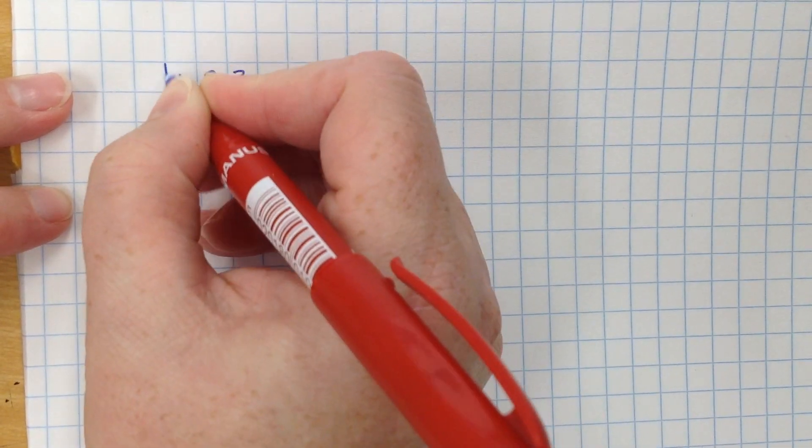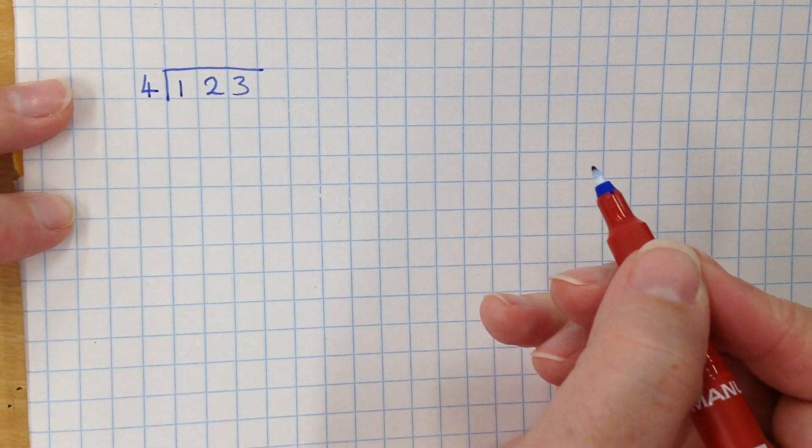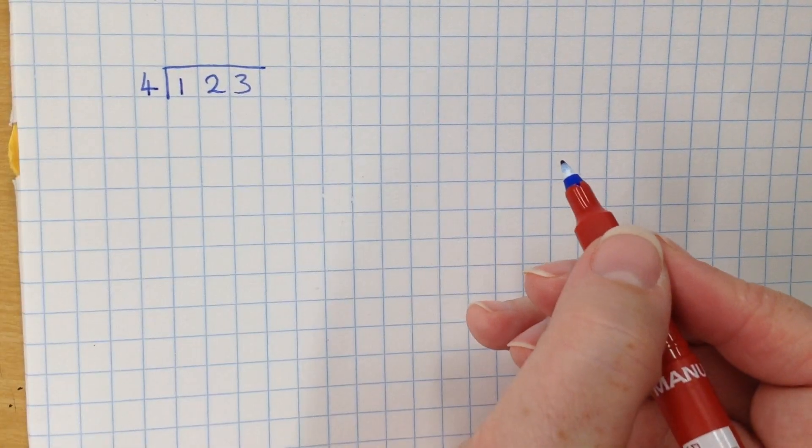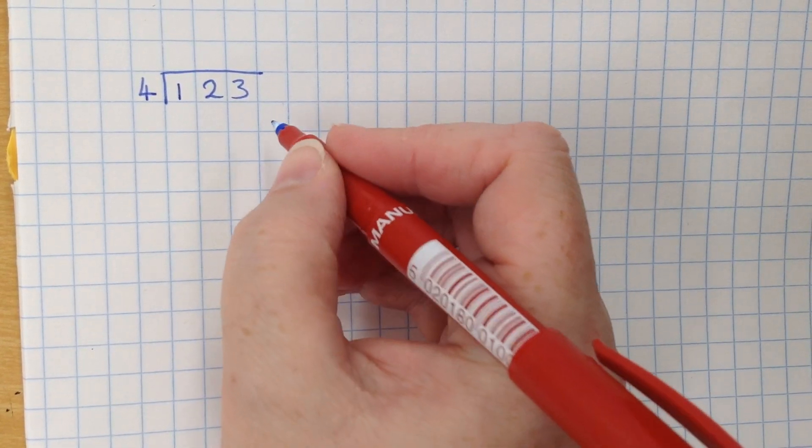So you write the calculation as you would do for the bus stop method. But you need to try and think about how you're going to be efficient. So you don't want to just be taking away 4 over and over again. You want to put it into a chunk.